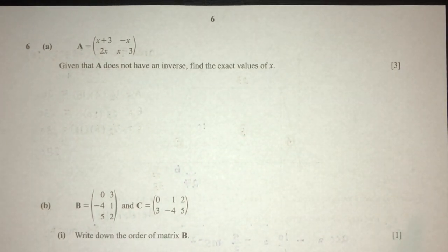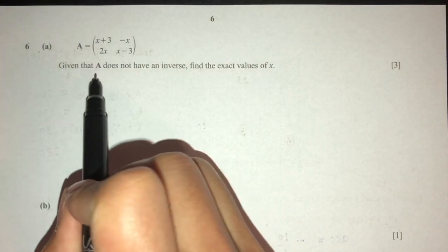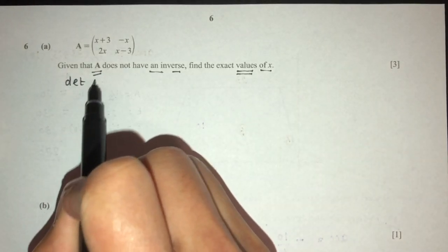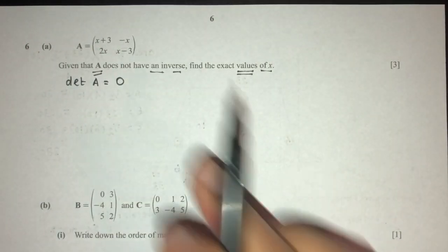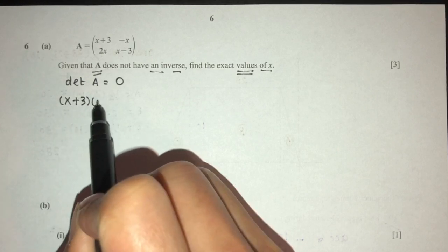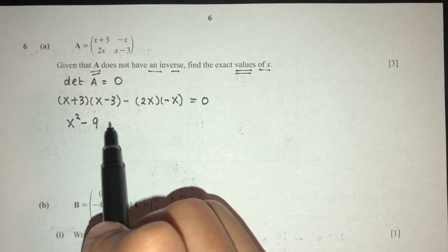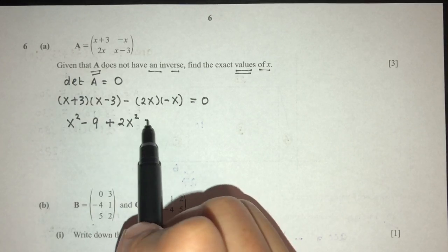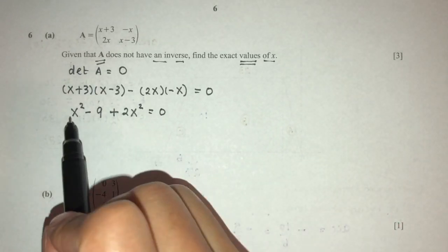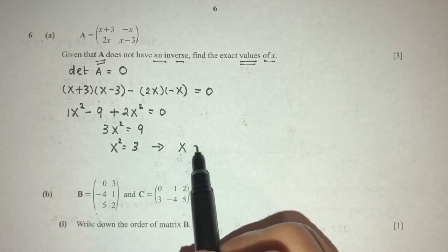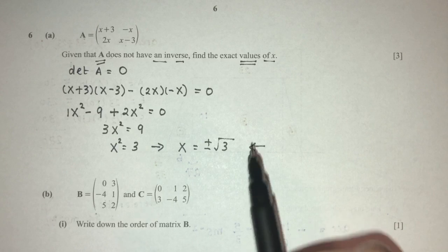Now let's move on to question number 6, part A. We have a matrix given to you. Given that A does not have an inverse, find the values of x. A matrix has no inverse when its determinant equals 0. The determinant: (x + 3)(x − 3) − (2x)(−x) = 0. Expanding: x² − 9 + 2x² = 0, so 3x² = 9, x² = 3, and x = ±√3. Those are the two values of x.